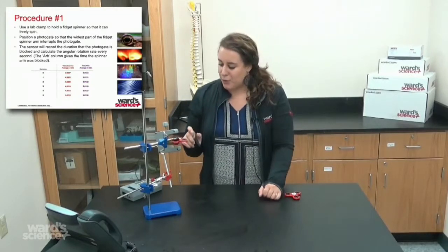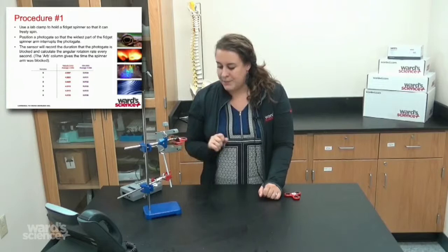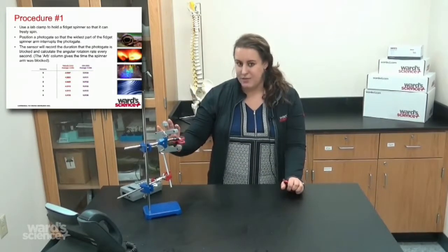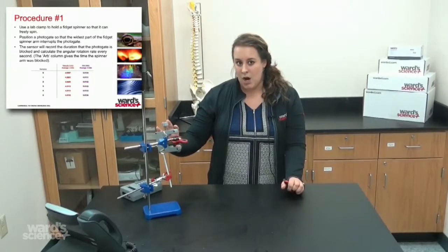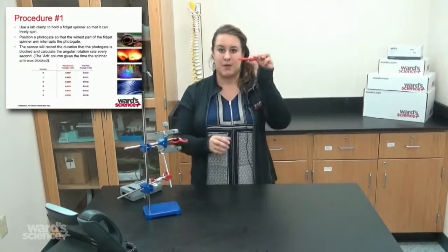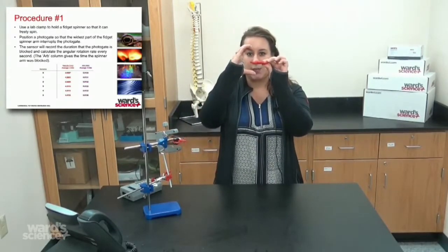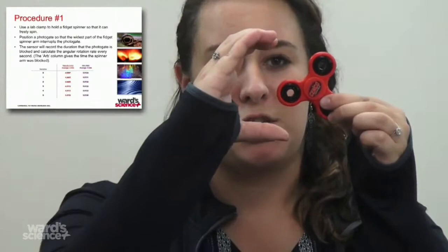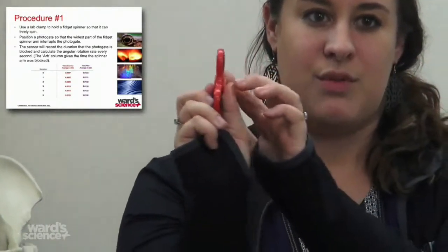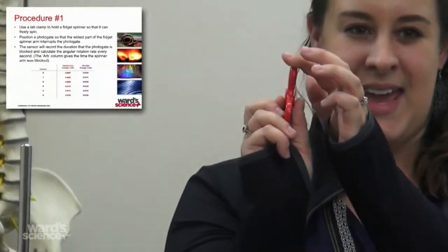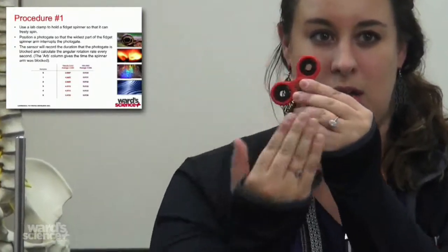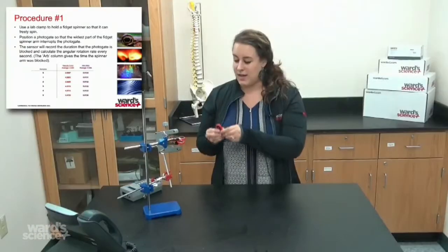You'll want to position the photo gate so that the widest part of the fidget spinner arm interrupts the photo gate. If the spinner is like this, then the photo gate will want to be around it. You don't want to do it this way because when it's this way, it's very narrow. But if you have it here, then there's a chance that the photo gate will collect the entire surface area and it'll be nice data.